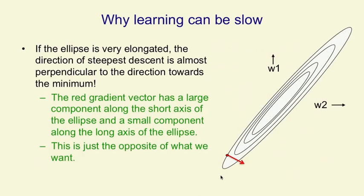Using this picture of the error surface, we can also understand the conditions that will make learning very slow. If that ellipse is very elongated, which is going to happen if the lines that correspond to two training cases are almost parallel, then when we look at the gradient, it's going to have a nasty property.